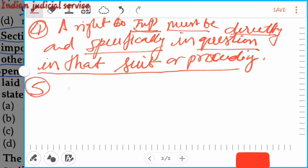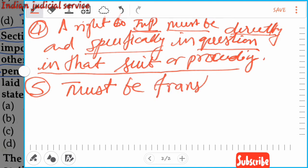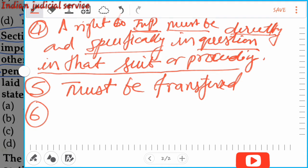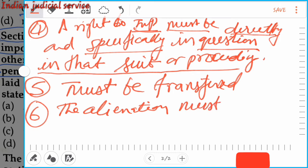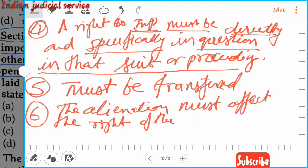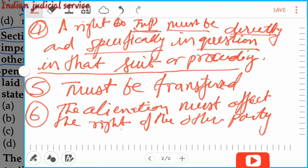Fifth important point: the disputed property must be transferred during the pendency of the suit. The last important point: the alienation must affect the right of the other party — that is, the party disputing in the suit. These are the important points related to the Doctrine of Lis Pendens.